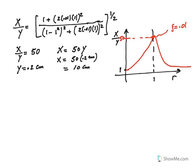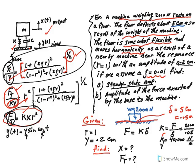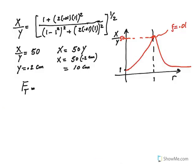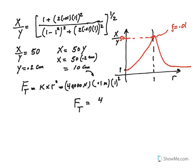Now let's calculate F_t. Going back, F_t equals k times x times r squared. K was 40,000 newtons per meter, x is 10 centimeters converted to 0.1 meters, and the frequency ratio r is 1. So F_t equals 40,000 times 0.1 times 1 squared, which comes out to 4,000 newtons. This is the amplitude of the force exerted by the base to the machine.